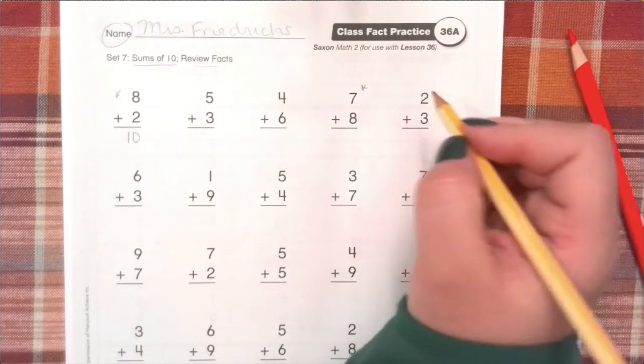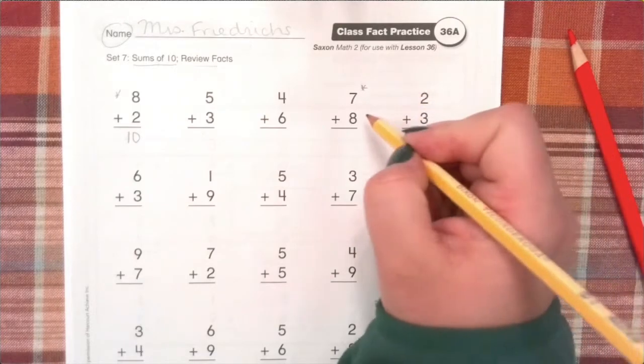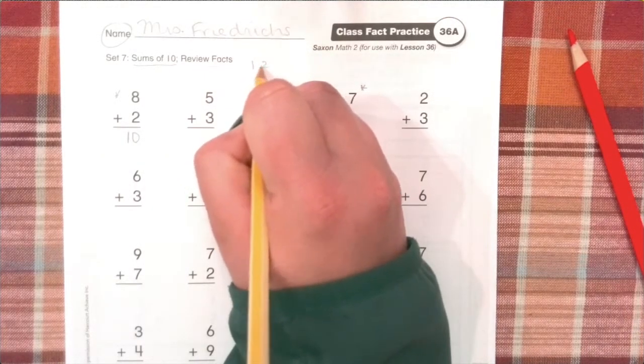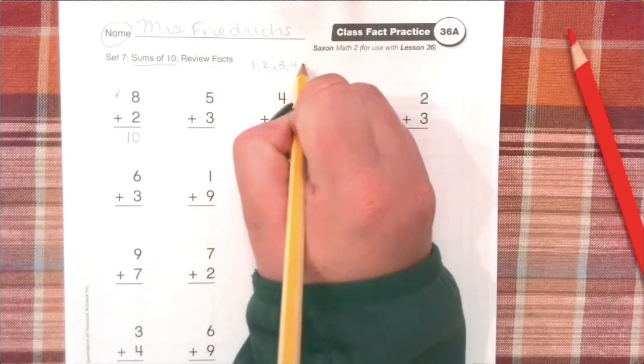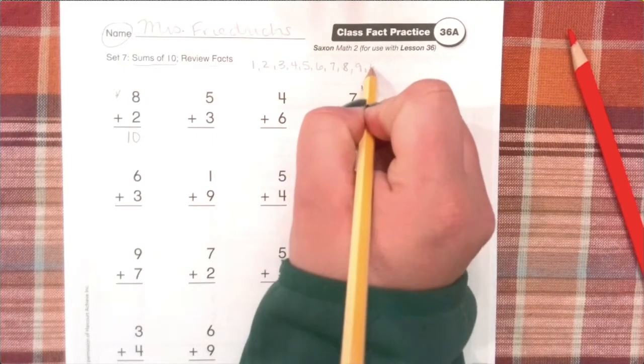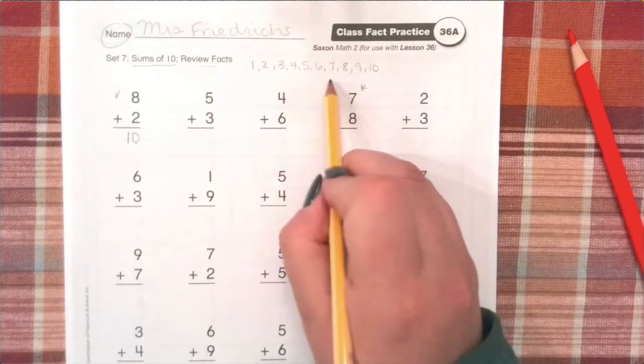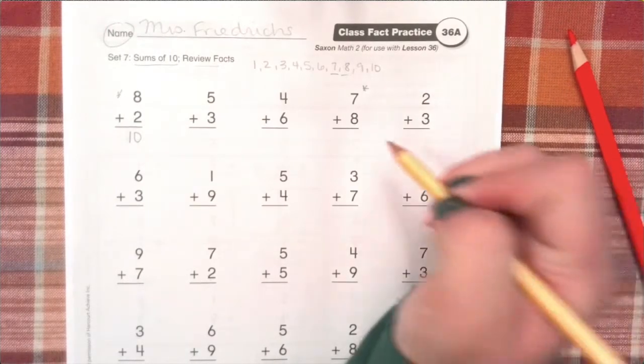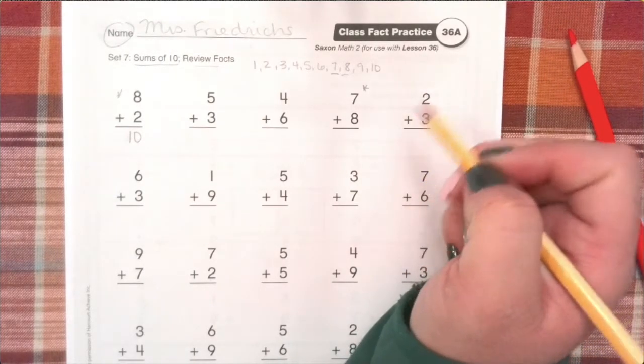Let's go ahead and look at a review fact. 7 plus 8. I notice when I look at 7 plus 8 that the numbers are right next to each other when I count. If you don't believe me, take a look. 1, 2, 3, 4, 5, 6, 7, 8, 9. I'm just going to count to 10. Take a look. 7 and 8 are right next to each other when you count. So we know that this has to be a double plus 1 fact.